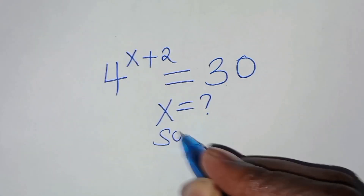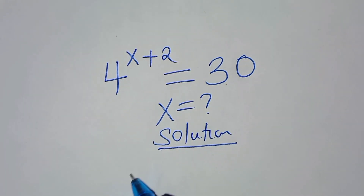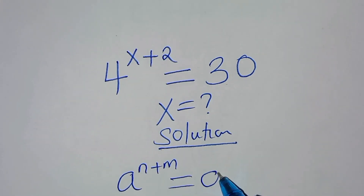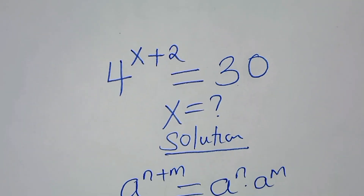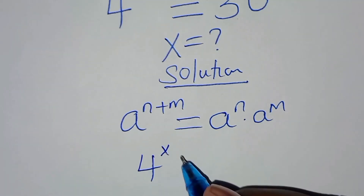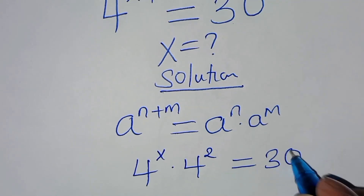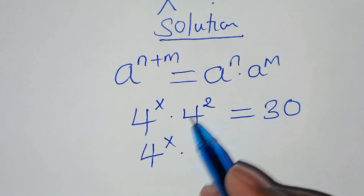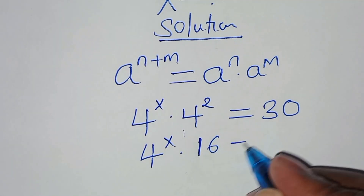Now, from here we have that 4 to the power x plus 2 is in the form of a to the power n plus m, which we can express as a to the power n times a to the power m. So applying this exponent property here, we will have 4 to the power x multiplied by 4 to the power 2. Now 4 to the power 2 is 16, and this is equal to 30.